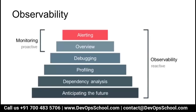To visualize the difference: monitoring is proactive — you set monitoring, get alerts, and see an overview. Observability is reactive — you have debugging, profiling, analysis, and you can also anticipate the future. You set alerts and overview with monitoring, but with observability you also do debugging, profiling, analysis, and future anticipation.